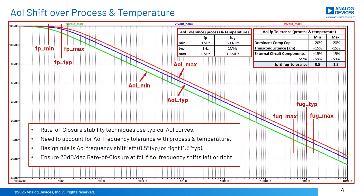There is no datasheet known for an op-amp that shows AOL frequency tolerance with process and temperature variations. If a typical op-amp circuit is stabilized using typical curves, it may become unstable or marginally stable due to process and temperature variations. Here we establish a worst-case design guide for AOL frequency variation with process and temperature. We assume the dominant compensation capacitor that sets the AOL frequency pole FB varies by ±20%, transconductance varies by ±15%, and external component tolerances of ±15% are lumped into the AOL frequency shift effects at FB. Our total AOL frequency shift will be ±50%, or between 0.5 times FB and 1.5 times FB.